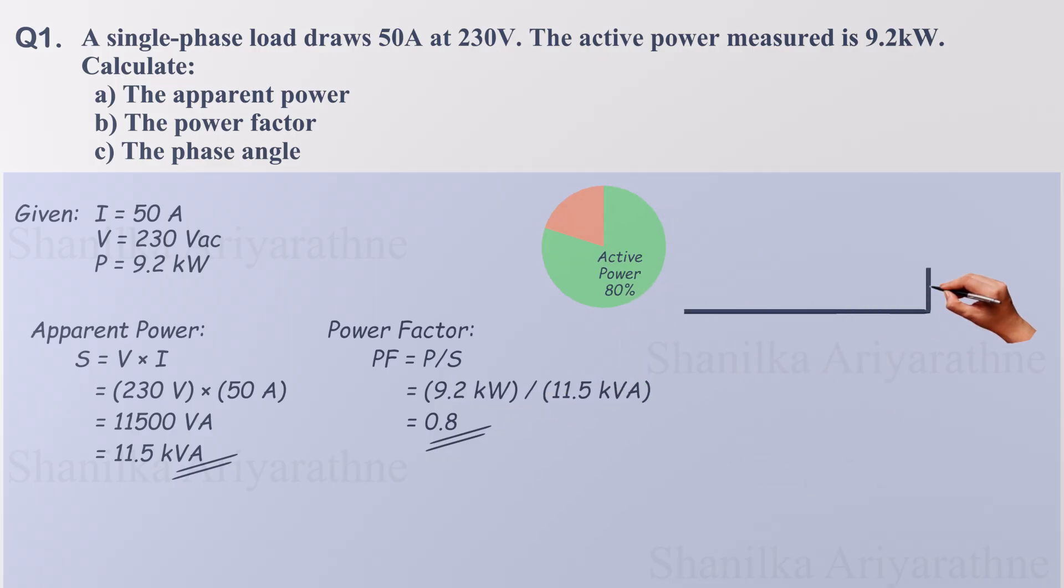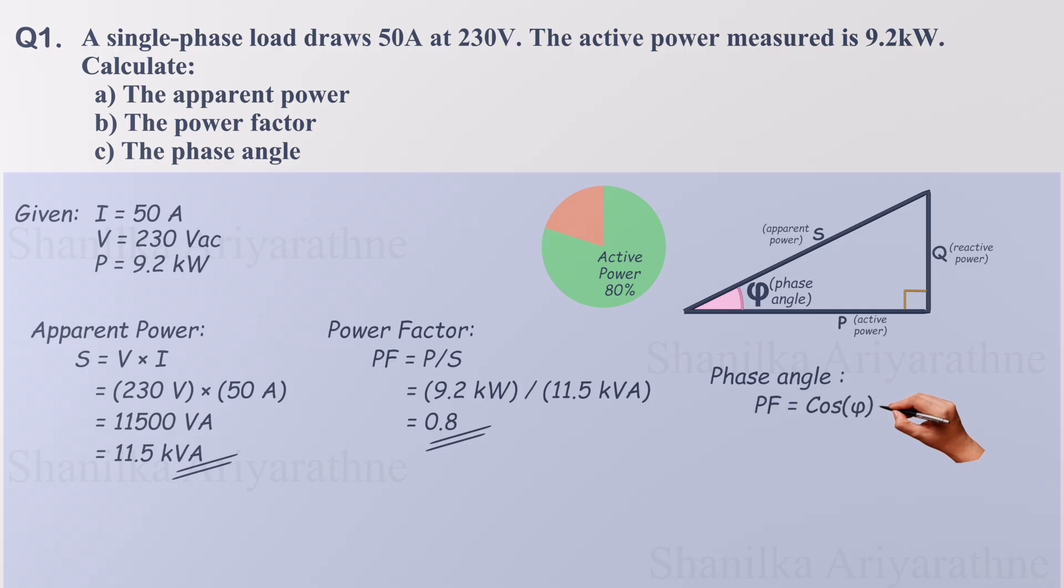We can draw the power triangle for this system. Finally, let's calculate the phase angle, which shows us the time displacement between voltage and current waveforms. Power factor is the cosine of the phase angle. Since we know the power factor, we can find the phase angle using the inverse cosine of our power factor. Phase angle is 36.87 degrees.